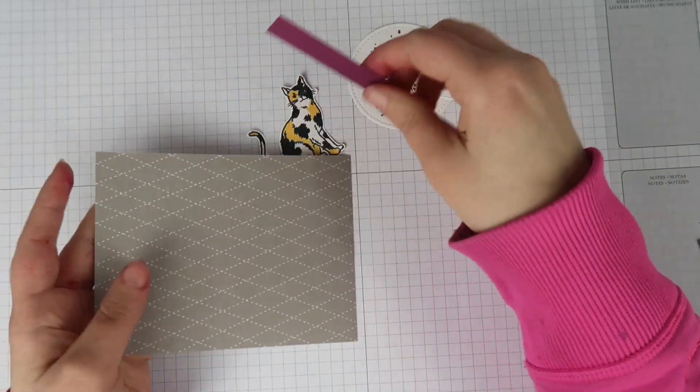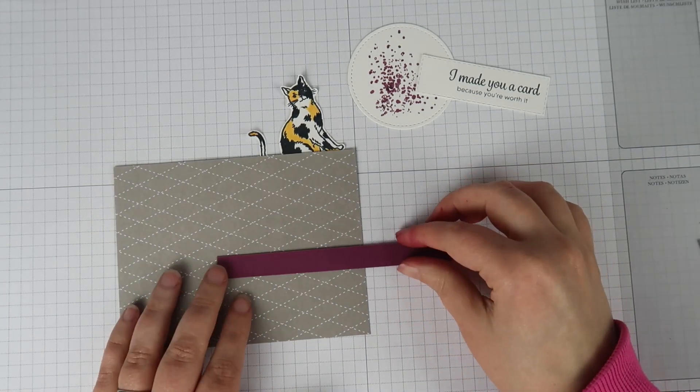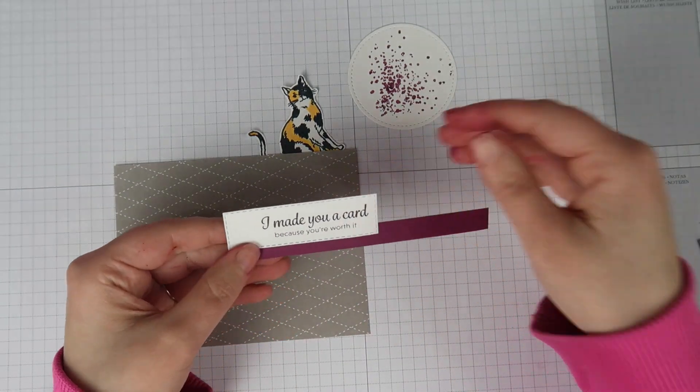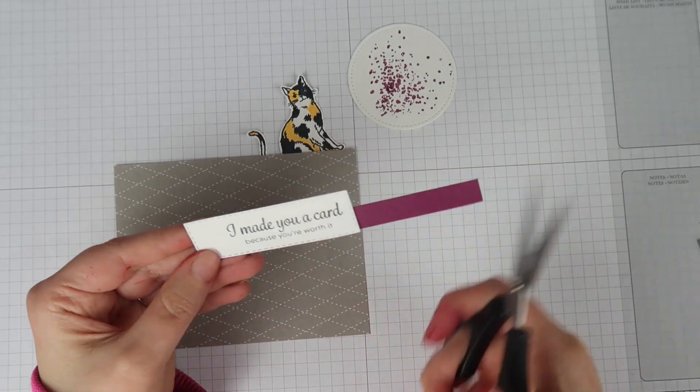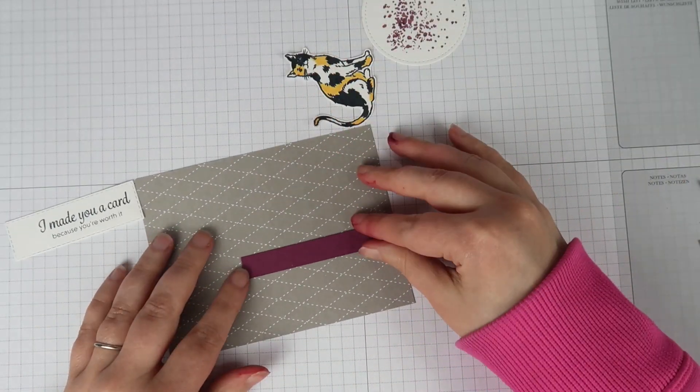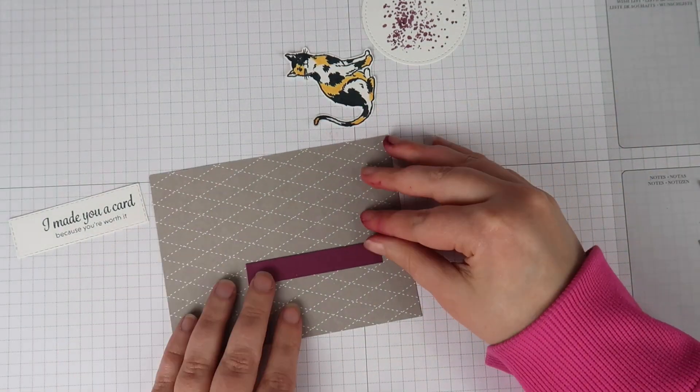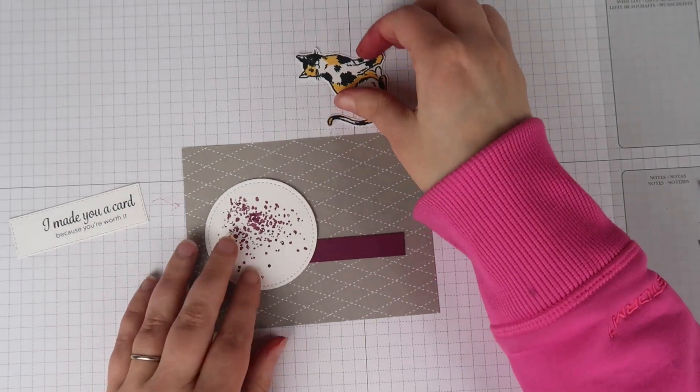So I also have a little strip of rich razzleberry paper. This is a scrap that I pulled from my stash. So the size of it doesn't really matter. You can cut it down. You can poke it out and make it look exactly how it needs to for your card. I'm going to glue that strip down to anchor my sentiment on the card and help me get everything lined up right where I need it.